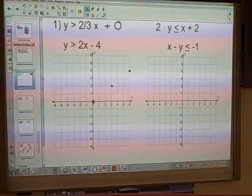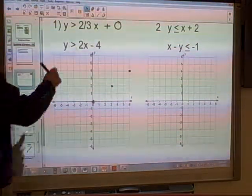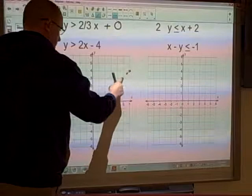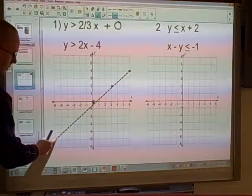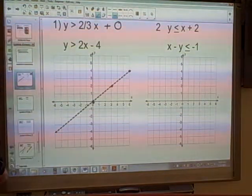No equal sign, so that tells us from earlier this is going to be a dotted line. So let me get a dotted line here. And then we're going to go ahead and we're going to draw that in.